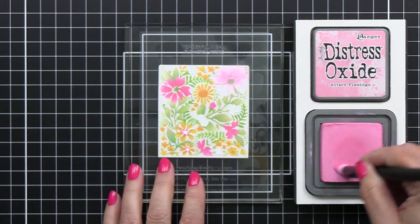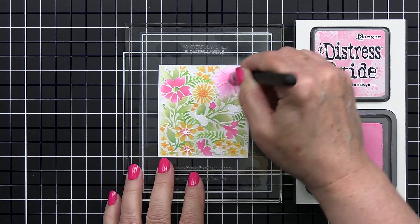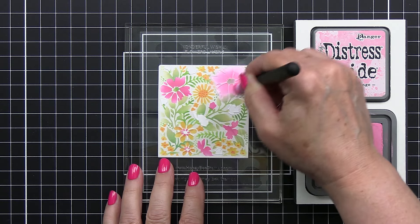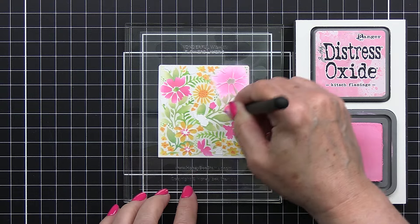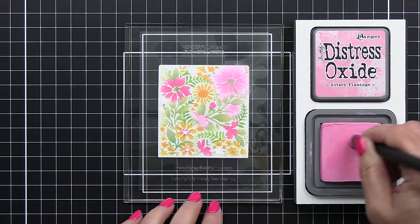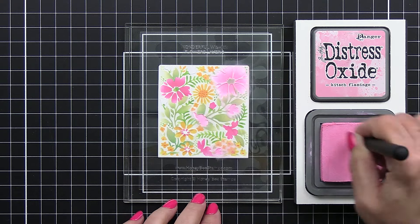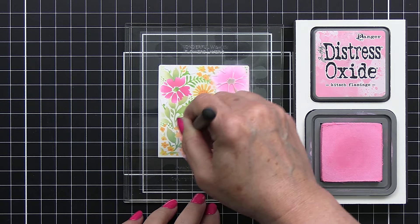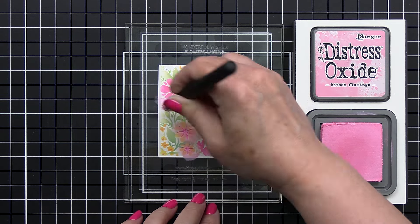Now here we have some Kitsch Flamingo and this is the last little floral stencil that's part of the stencil set. I'm going to go in again with my detail brush and just go in with clockwise, counterclockwise and pouncing motions to get into all of those tiny little areas.